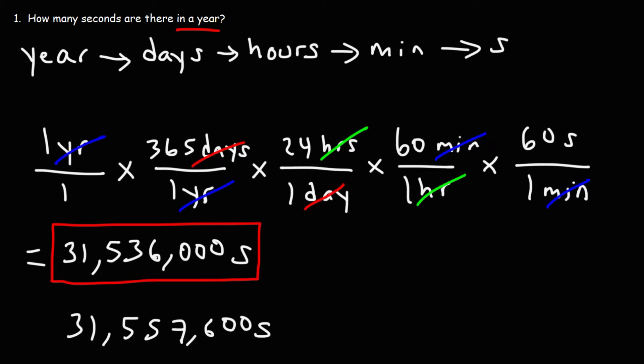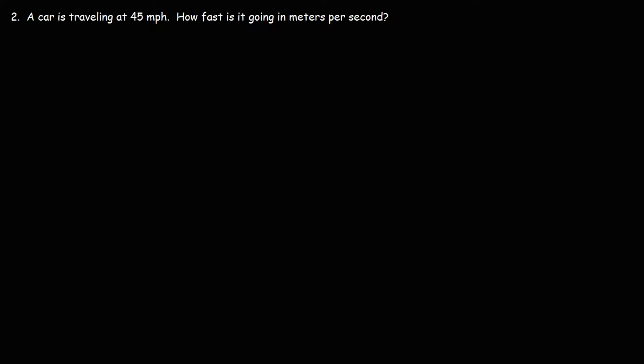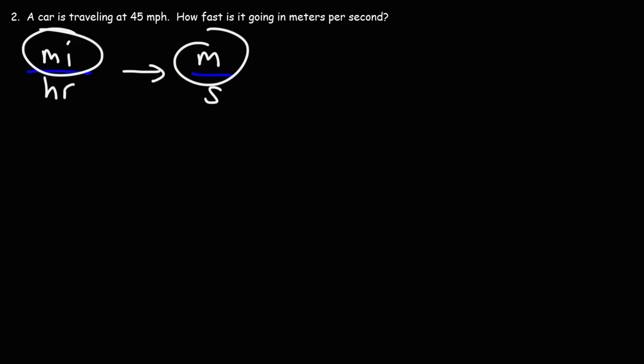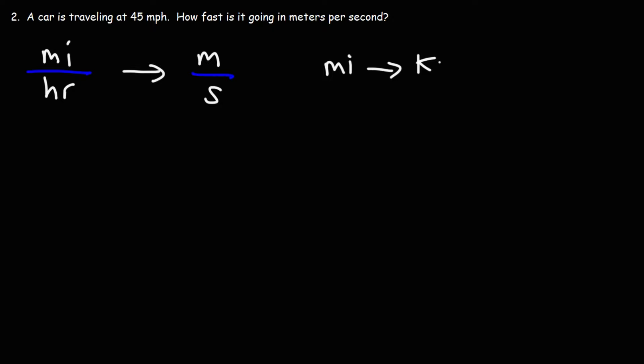Let's move on to the next problem. A car is traveling at 45 miles per hour. How fast is it going in meters per second? This is a two-part problem. First, we need to convert the units of length — miles to meters. We can convert miles to kilometers, and then kilometers to meters. Next, we need to convert the units of time from hours to seconds, which we can do by converting hours to minutes, and then minutes to seconds.